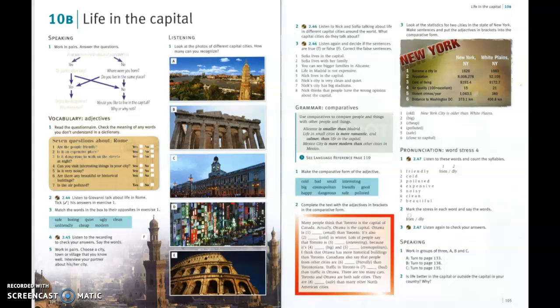This screencast is about lesson 10b from the book Straightforward Elementary. It's about capital cities and cities in general, and the main grammar focus is comparative adjectives.